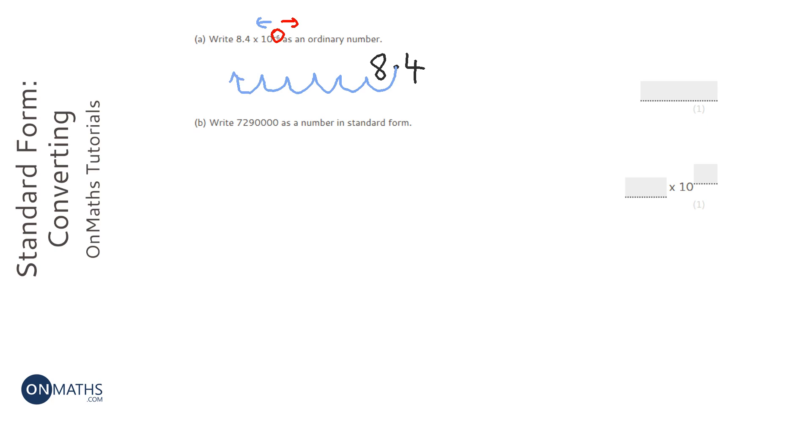So the decimal point will now be here and you fill in all of the jumps with zeros. One of the jumps is used by the eight but all the other ones we fill in with zeros.